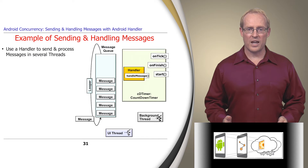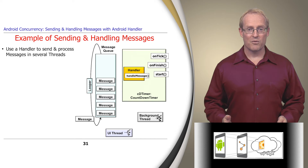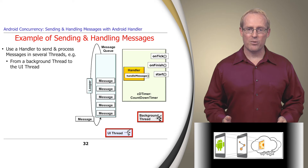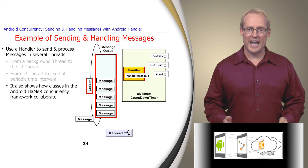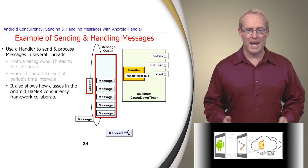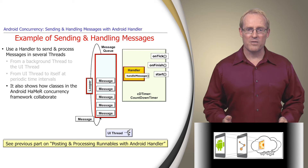This example shows how to use a handler to send and process messages in several threads — for example, how to send a message from a background thread to the user interface thread, and how to send messages at periodic time intervals from the user interface thread to itself. It also outlines how the Android handler, looper, and message queue classes collaborate to implement a different path through the Hammer framework than covered by the previous post example.